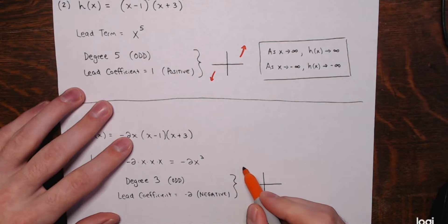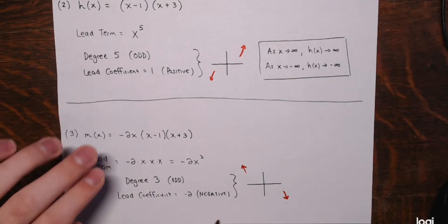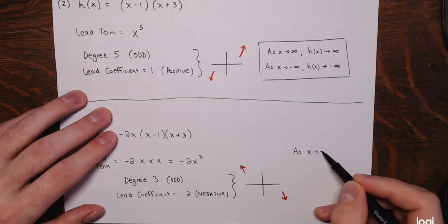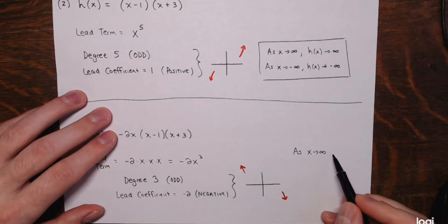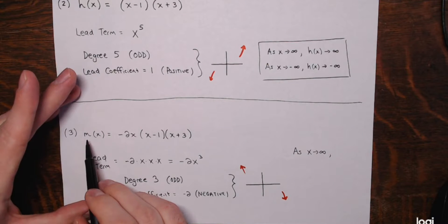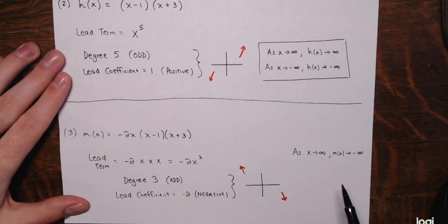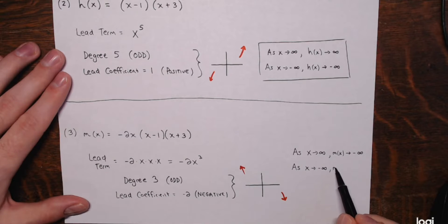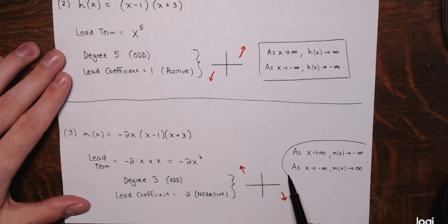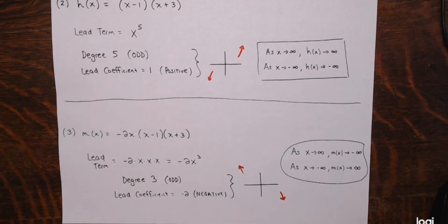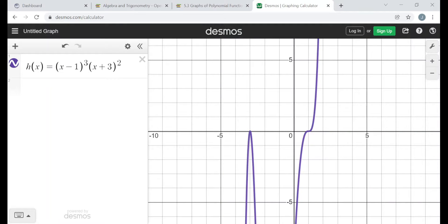An odd degree with a negative lead coefficient just flips the end behavior: it's going to be going up on the left end and down on the right end. As x approaches infinity (the right end), the value of the function m(x) is going to negative infinity. And as x approaches negative infinity, m(x) is approaching positive infinity. That's the description of the end behavior.